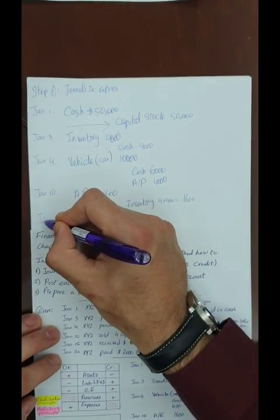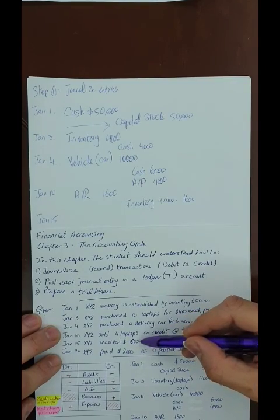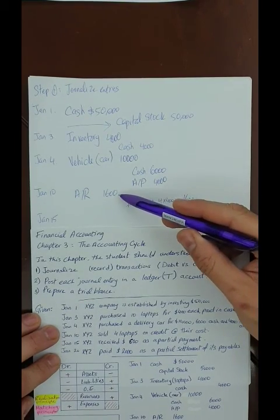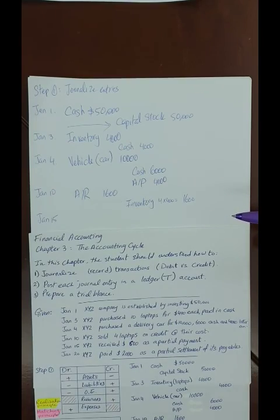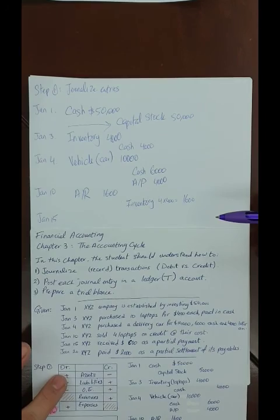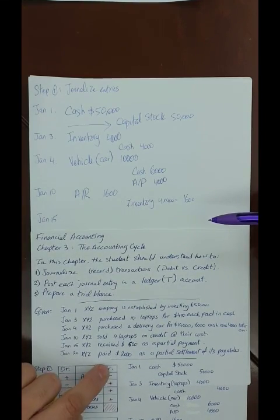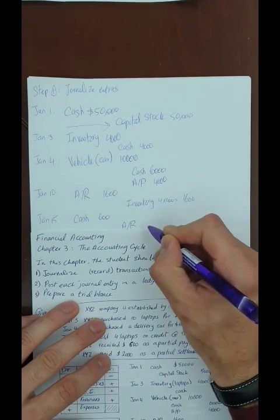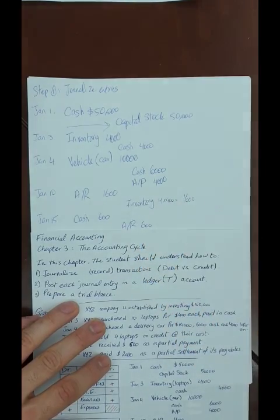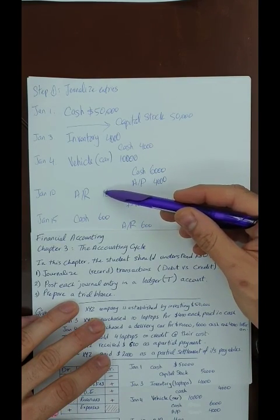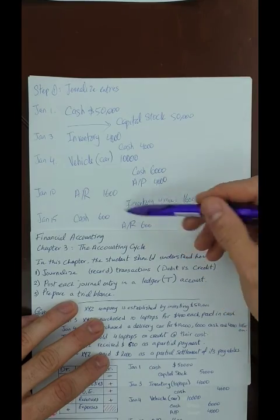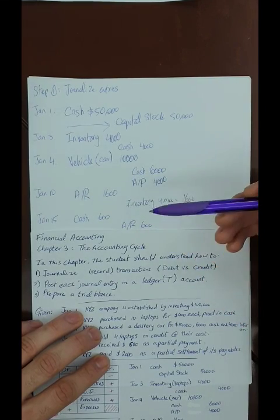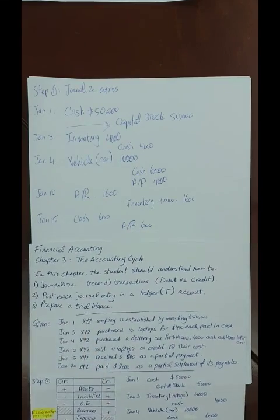Jan 15 — received $600 as a partial payment from the Jan 10 sale. Cash goes up and accounts receivable declines by $600. Increase cash using a debit; decrease accounts receivable using a credit. DR Cash $600, CR Accounts Receivable $600. The remaining balance in accounts receivable is $1,600 − $600 = $1,000, still expected from the customer.